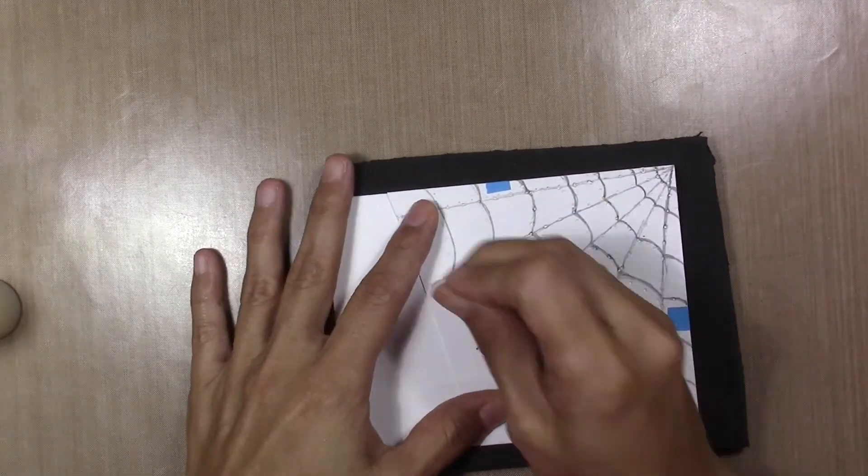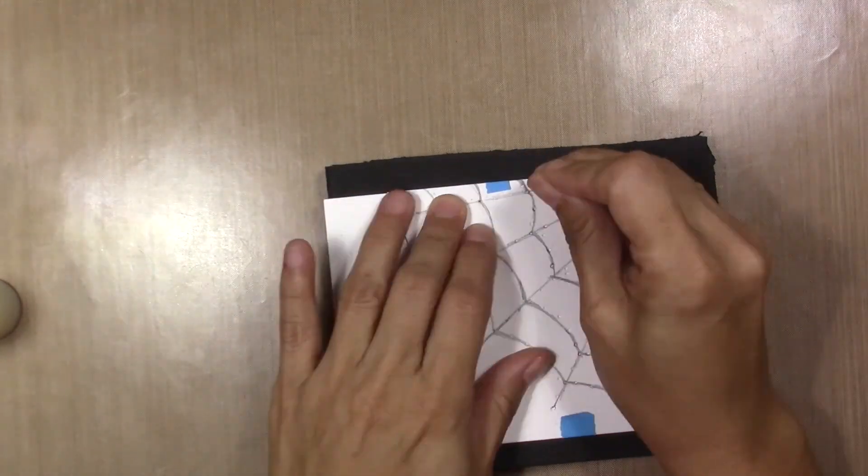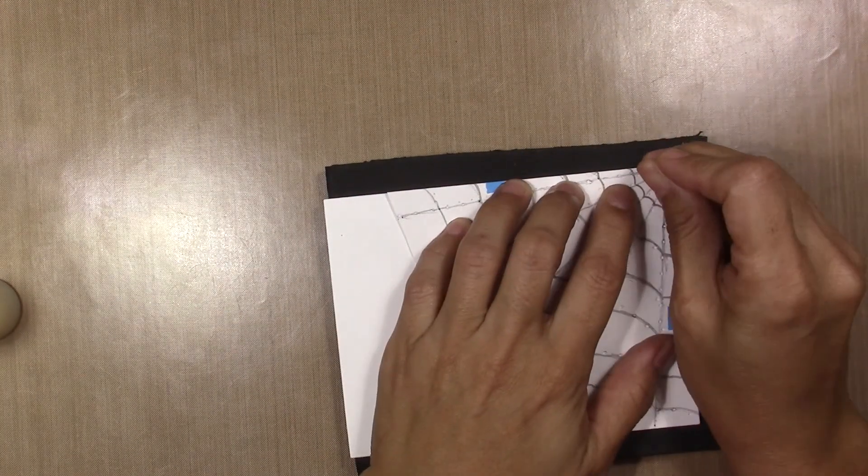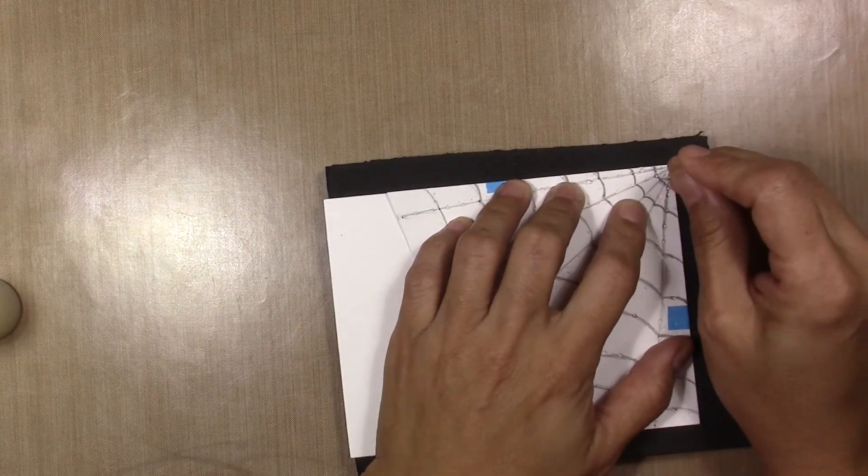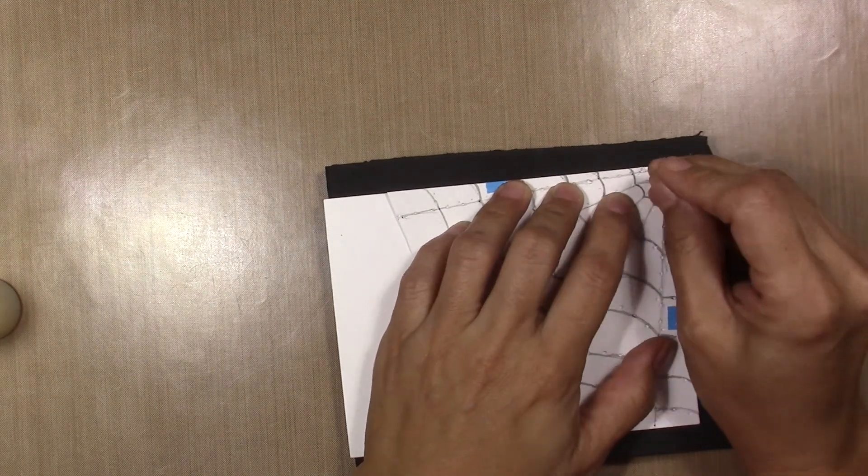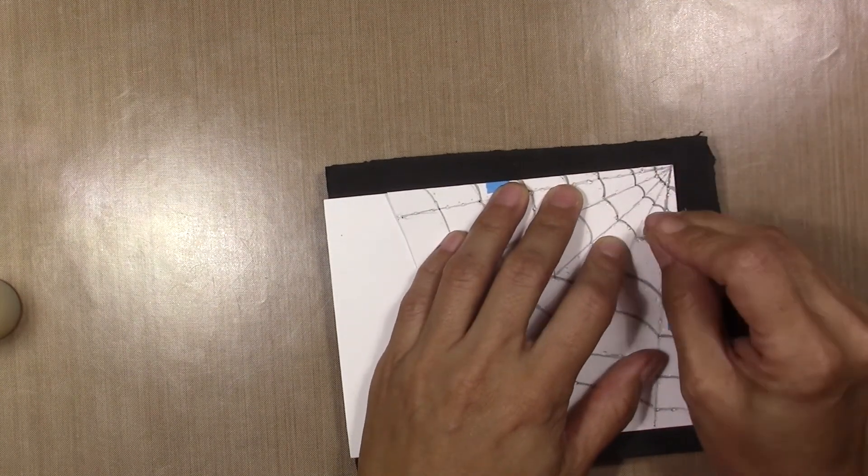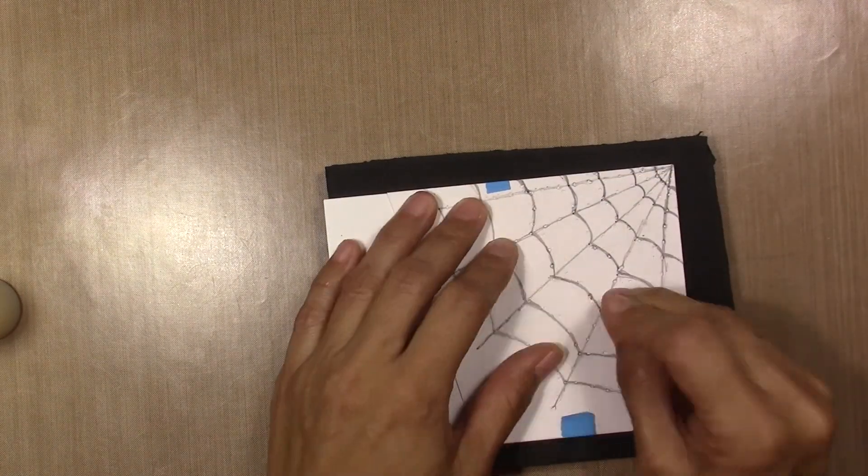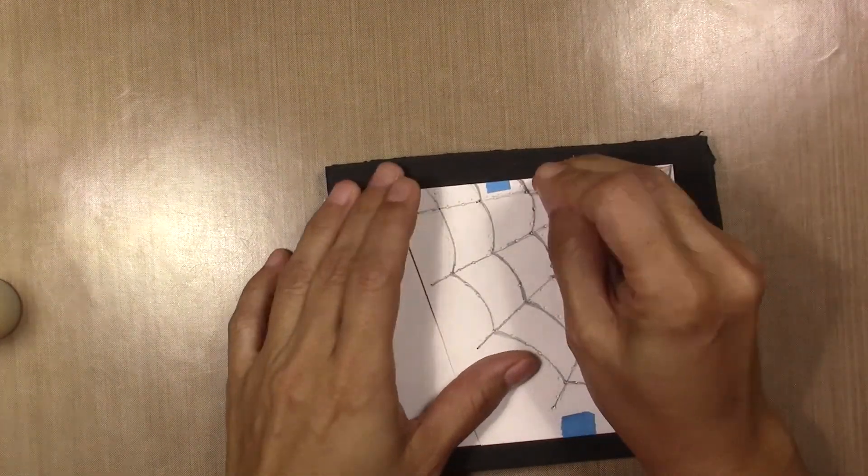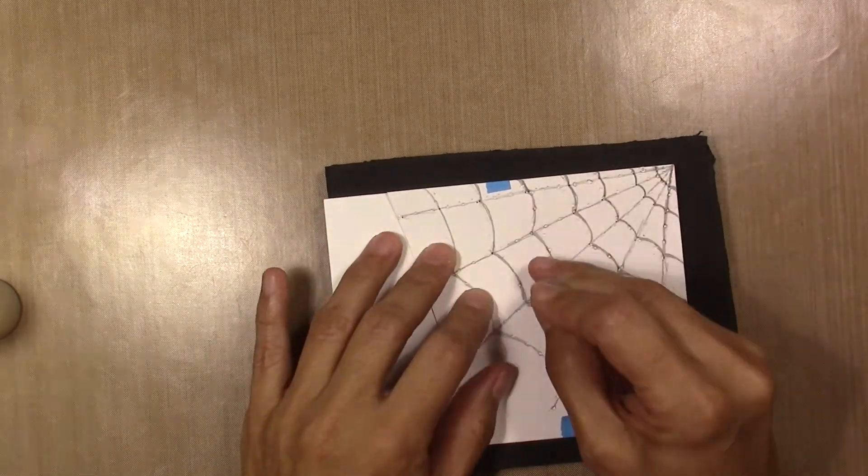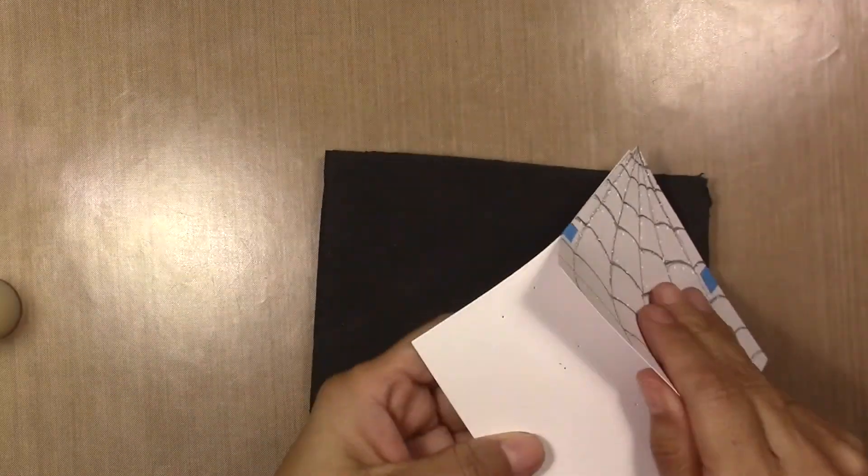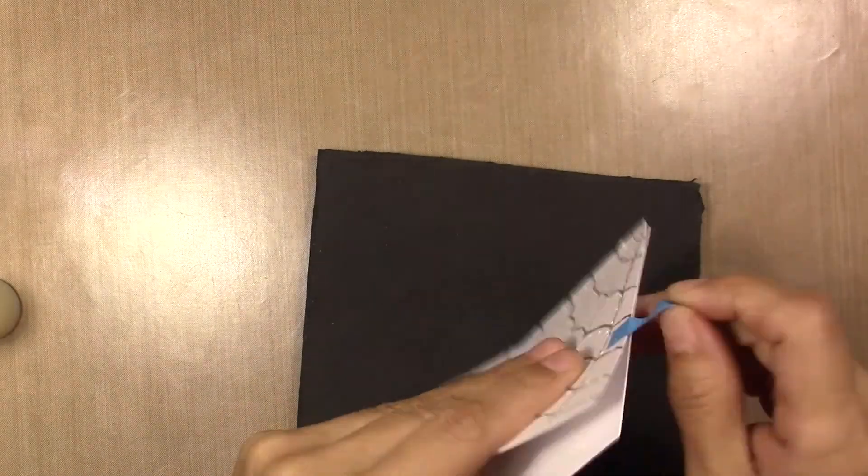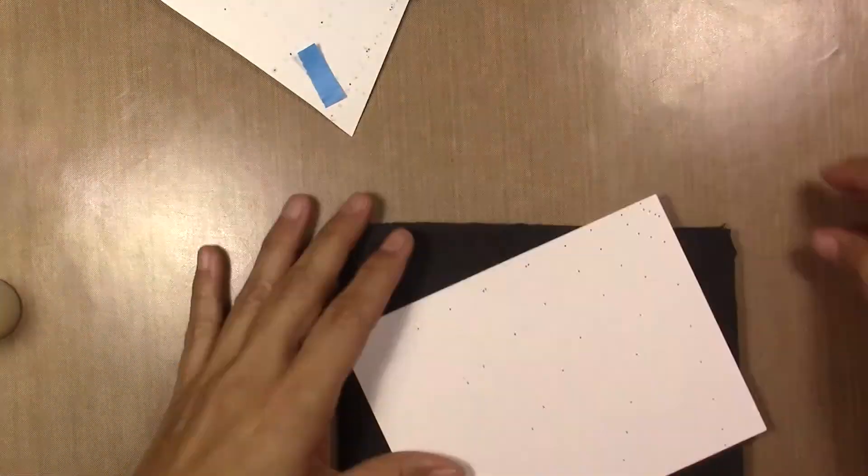And I'm going to start making holes with a needle where all the lines meet. Then when I finish doing this I'm going to take the pattern away and I'm going to start doing little holes in all the lines, thinking about how big I want my stitches. That's a preference choice.